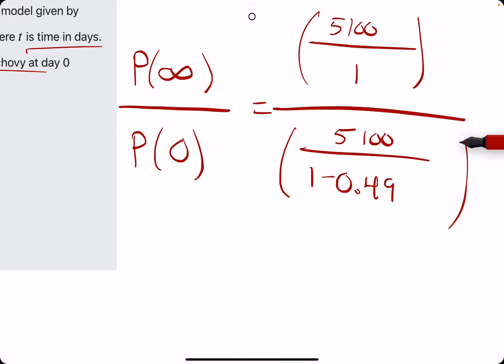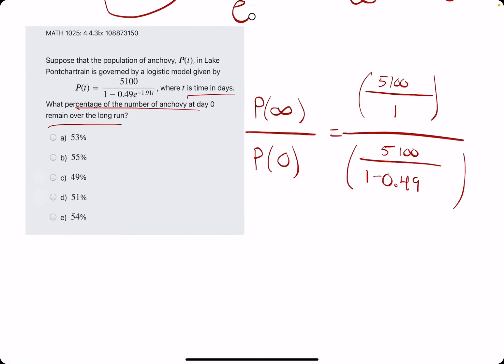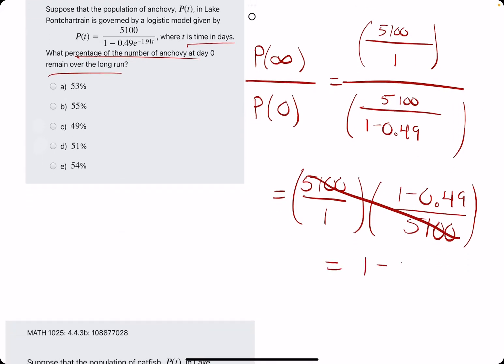So, what we're left with is 1 minus 0.49 in the bottom. So, if we were to simplify this a little bit, dividing by a fraction is the same as multiplying by its reciprocal. And, naturally, we can cancel the 5,100 and all we're left with is 1 minus 0.49 divided by 1. So, we should get 0.51 or 51% for this answer.